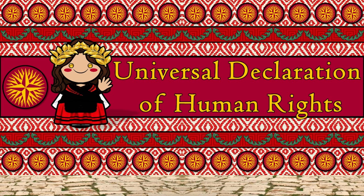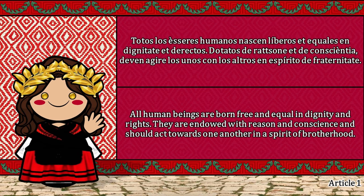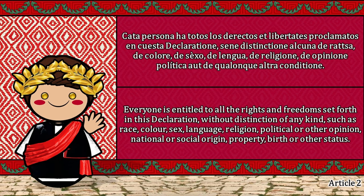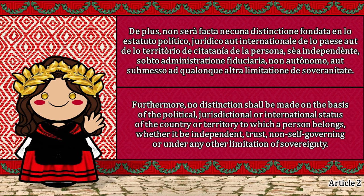The Universal Declaration of Human Rights: Todos los éceres humanos nacen liberos e iguales en dignitate e directos. Dotatos de razone e de conciencia. Deven agire los unos con los otros en espíritu de fraternitate. Cada persona ha todos los derechos y libertades proclamados en esta declaración. Se n'è distinzione alcuna de razza, de colore, de sexo, de lengua, de religión, de opinión política o de cualquier otra condición. De plus, no será fatta ninguna distinción fondada en lo estatuto político, jurídico o internacional de lo país o de lo territorio, de cittadina de la persona. Se é independente, sobto amministrazione fiduciaria, non autonomo o submesso a qualunque altra limitazione de soveranitáte.